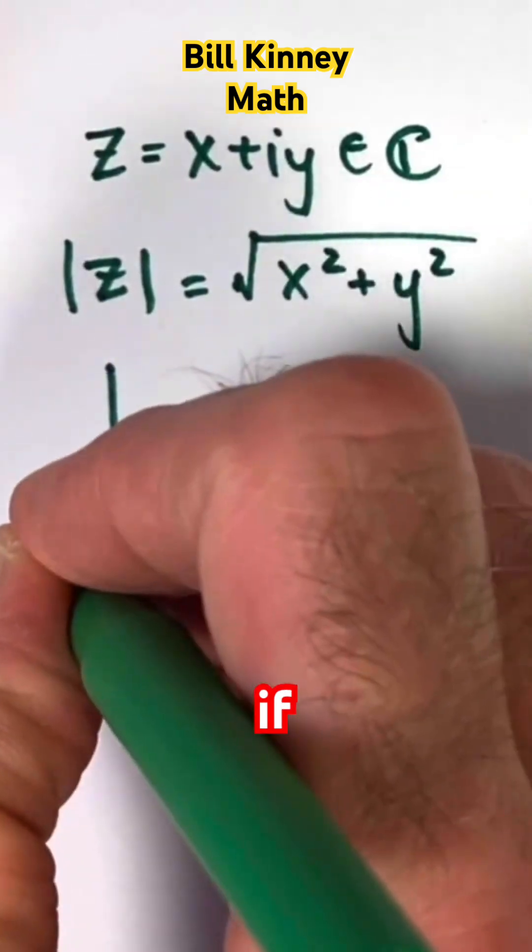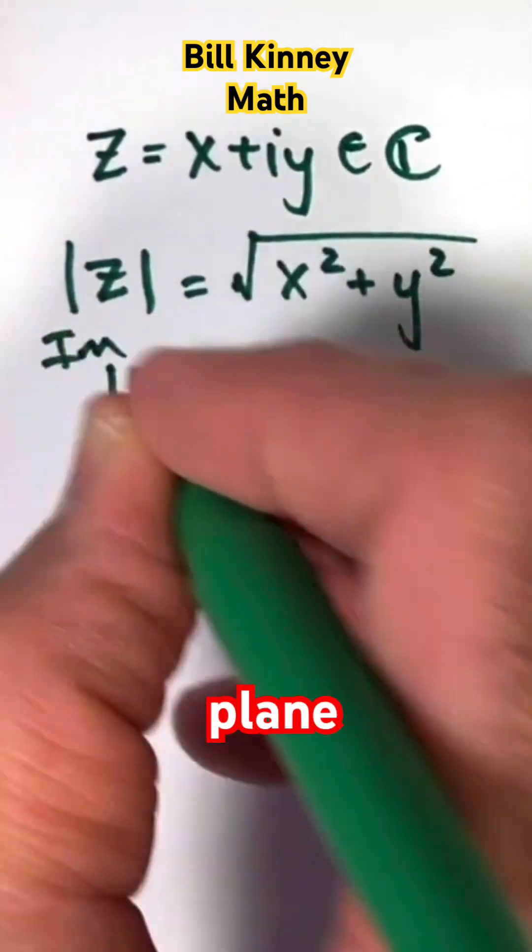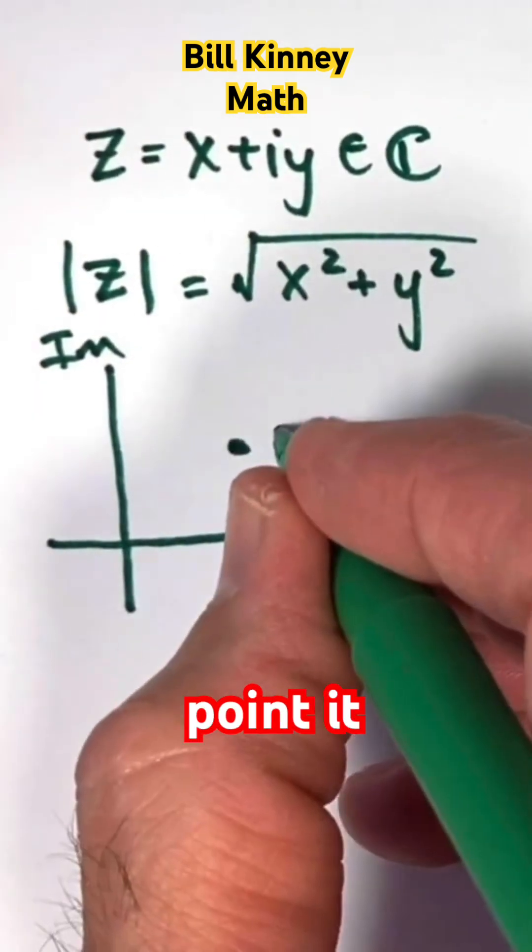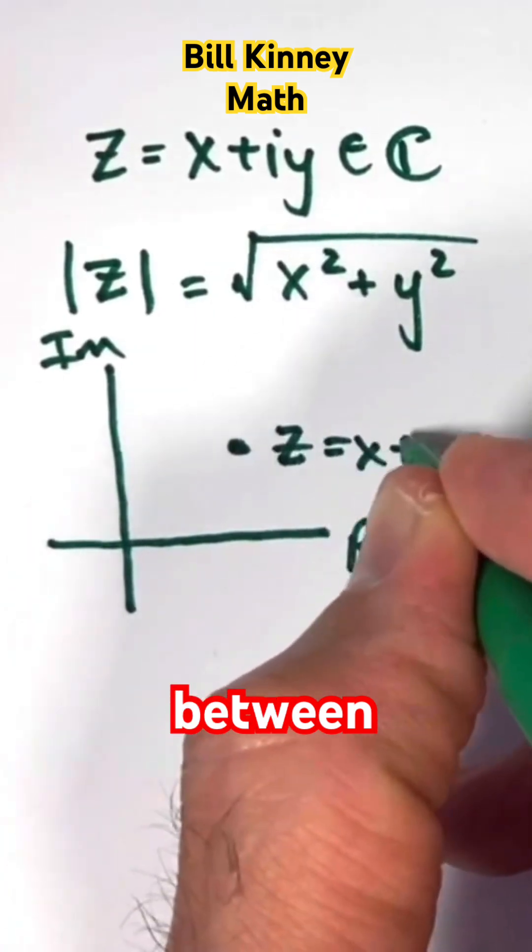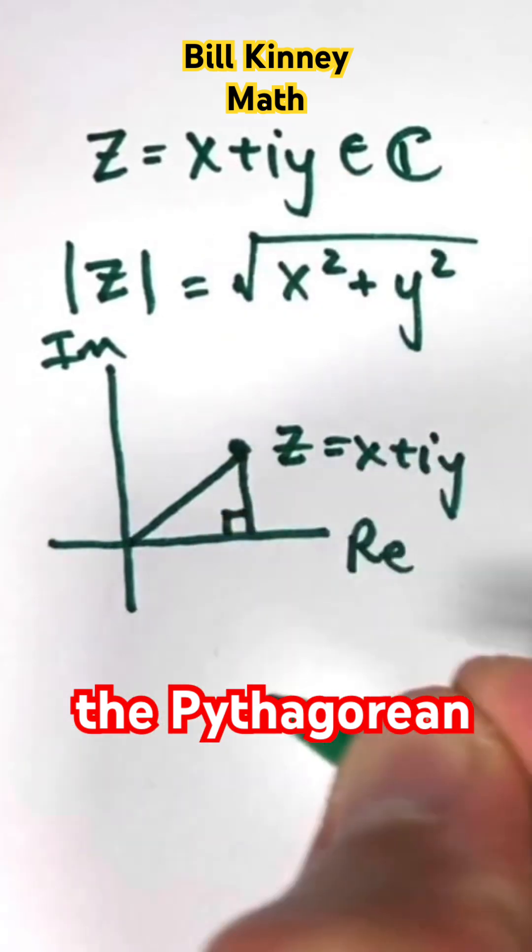Geometrically speaking, if we plot z in the complex plane, this quantity represents two things. As a point, it represents the distance between this point and the origin. That can be seen by applying the Pythagorean theorem.